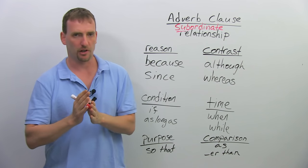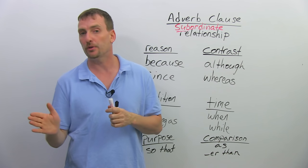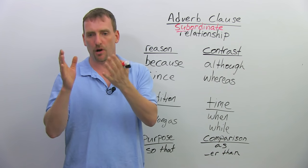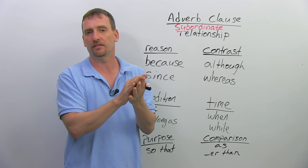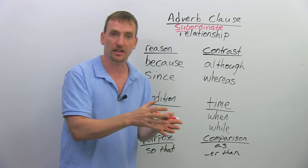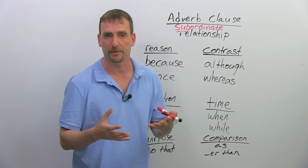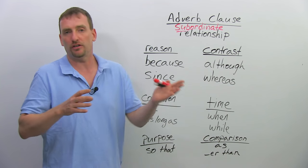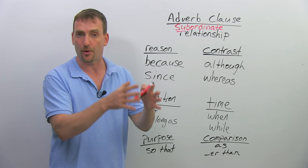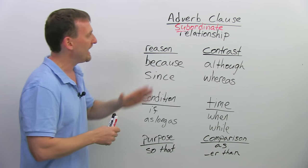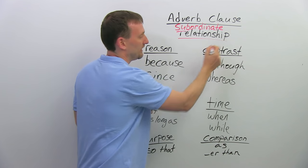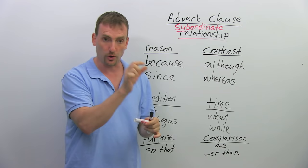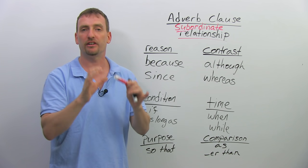The thing to remember about adverb clauses — what makes them different from noun clauses or adjective clauses — is that they don't modify words. A noun clause acts as a specific function in the independent clause: subject, object of the verb, or complement. The adjective clause always modifies or identifies a noun. The adverb clause shows a relationship, and that's very important to remember because the subordinate conjunctions — the words that join the clause to the independent clause — have a very specific function.